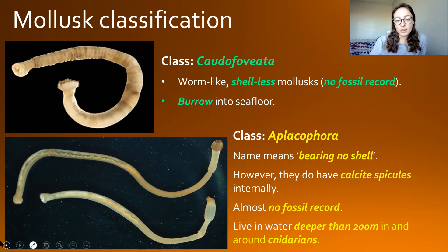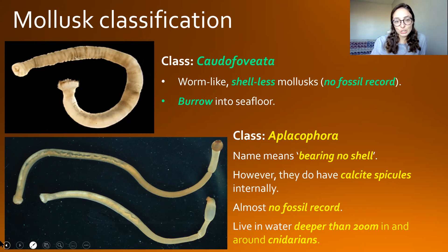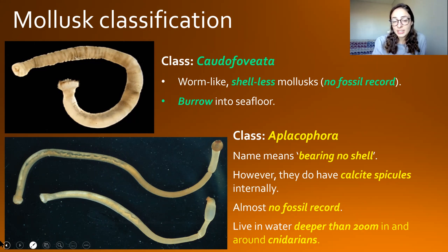First, we have Caudofoveata. These have no shells, are worm-like in morphology, and live by burrowing into the seafloor. Because they have no shell, they have no fossil record, so these guys aren't super important for paleontology, which is why they're not getting their own video. Additionally, Aplacophora also has no shell — the name actually means that it bears no shell. They have very little fossil record, though they do have some calcite spicules that don't typically preserve in structure.